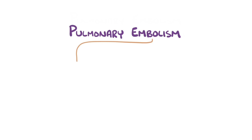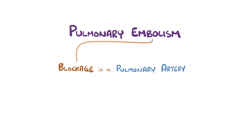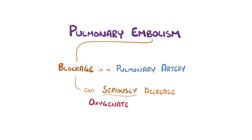A pulmonary embolism happens when an embolus, which is a type of blockage, suddenly gets lodged inside a pulmonary artery. Depending on which pulmonary artery or arteries are affected by the blockage, that can seriously decrease the amount of oxygenated blood that gets out to the body.